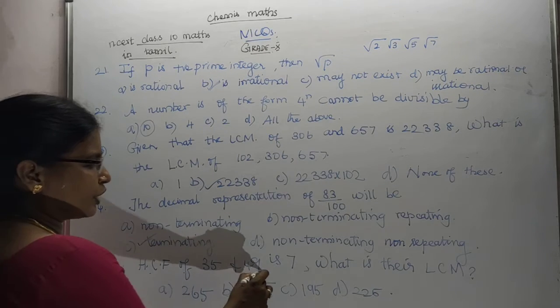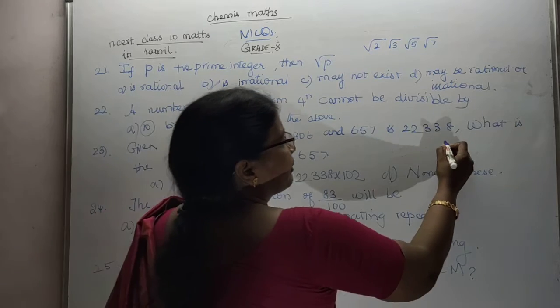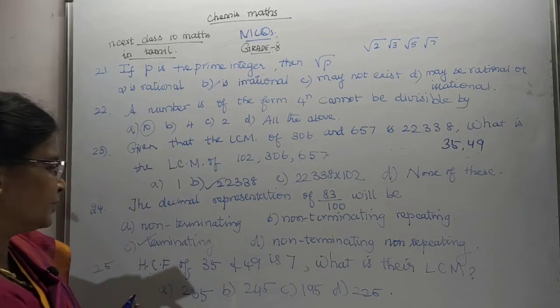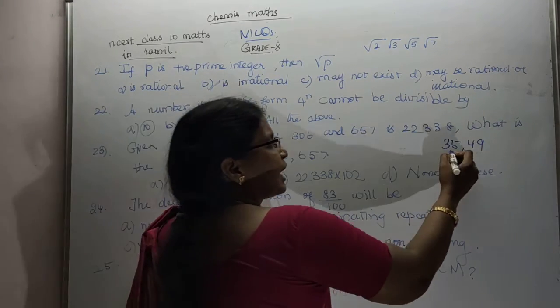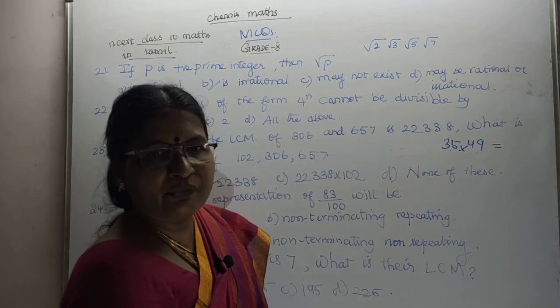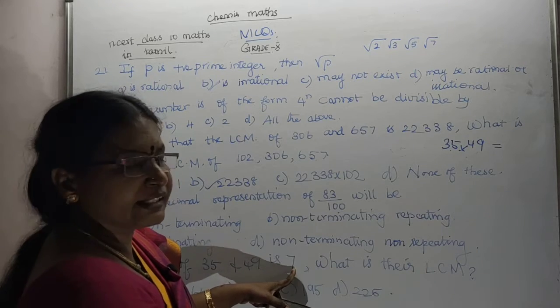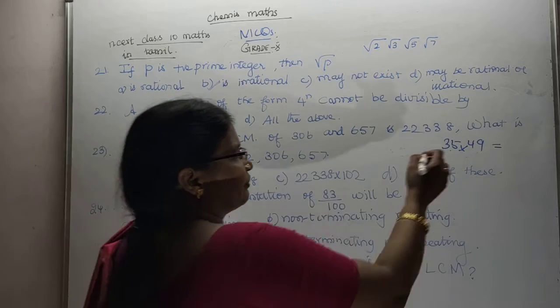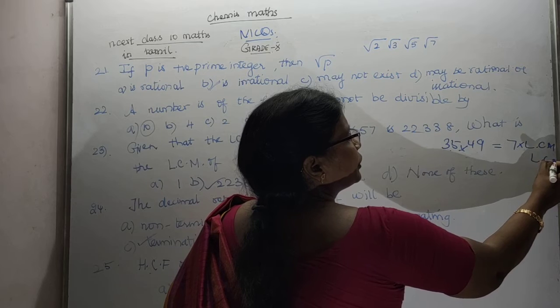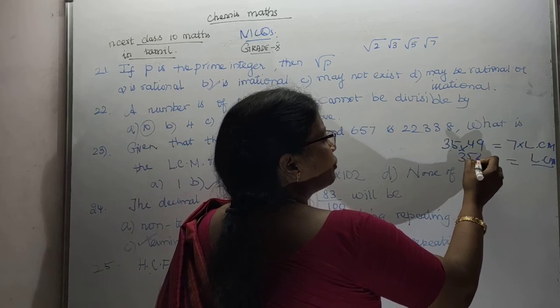Question 25: HCF of 35 and 49 is 7. What is their LCM? What do we know? Product of these two, LCM and HCF is equal to product of these two numbers. LCM into HCF. HCF is given. We don't know about LCM. We have to divide. LCM is equal to 35 into 49 divided by 7.